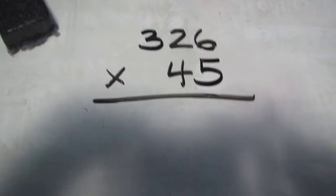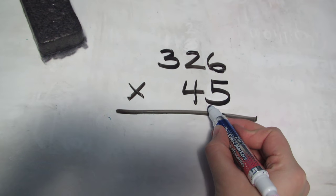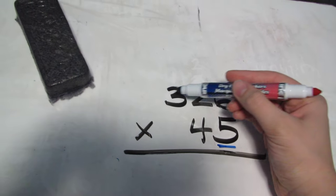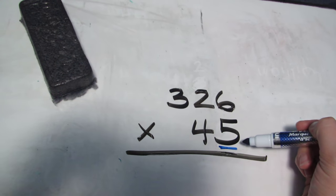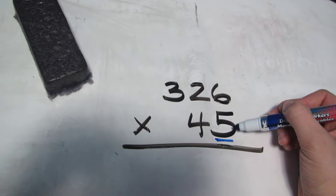So what we want to start off with, like usual, is multiplying the numbers in our ones place. In this case it's a 5. So we're going to do 326 times 5, one number at a time, starting with the number in the ones place.